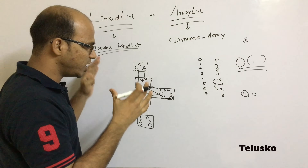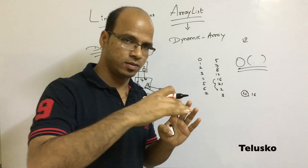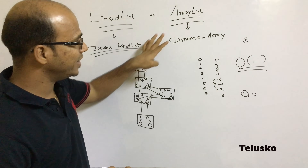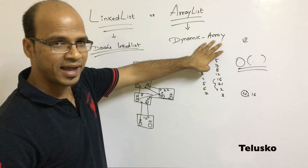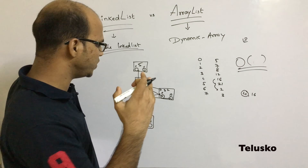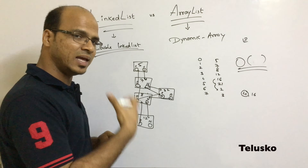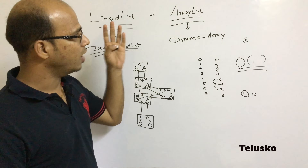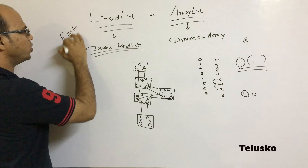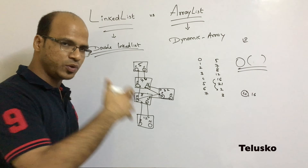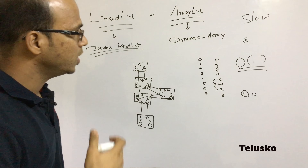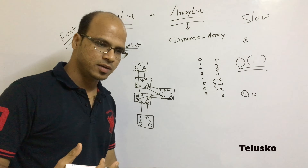So inserting in between is very efficient with LinkedList because only two node references change. LinkedList is much faster than ArrayList for adding elements in between. LinkedList wins here — it is fast for insertion, while ArrayList is slow for insertion in the middle.